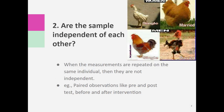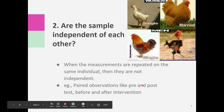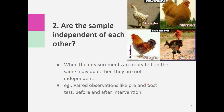The second step is to know whether the two variables which we are associating are independent of each other or are paired samples. When the measurements are repeated on the same individual, they are not independent — they are called paired samples or paired observations, like pre and post test, or before and after an intervention like a drug. Paired observations and independent observations are important because both follow different sets of statistical tests.